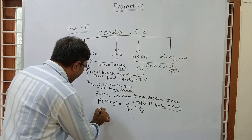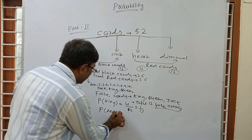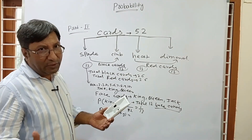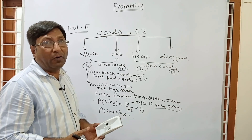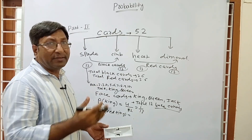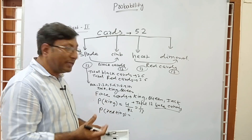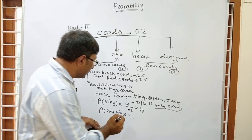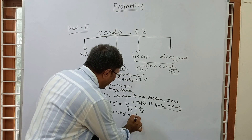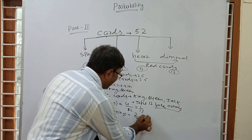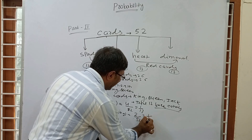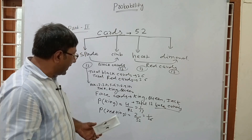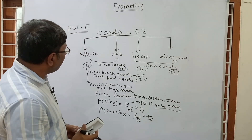Similarly, if the question asks for the probability of drawing a red King: since half the cards are red and half black, out of 4 Kings, 2 are red and 2 are black. So the probability of a red King = 2/52 = 1/26.